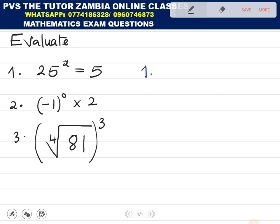Okay, so number one is saying 25 to the power x equal to 5. The first thing, expressing this one as a base of 5 will help us evaluate this.